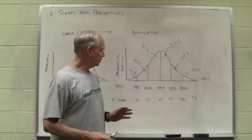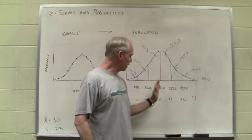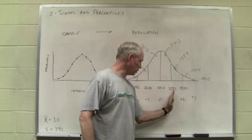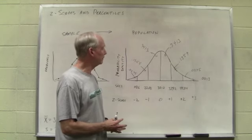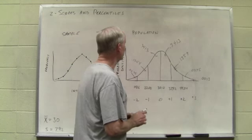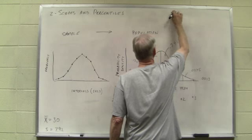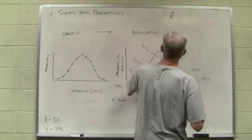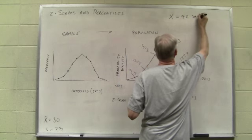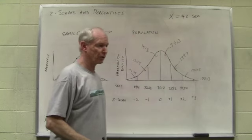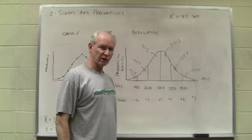Basically, the normal distribution table that's in the back of our book will tell us these proportions, even if they are values that aren't these perfect 0, plus 1, plus 2, plus 3, or whatever. For example, let's suppose that we have a raw score of 35 seconds, excuse me, not a mean, but a raw score of 42 seconds for someone in our task. And we want to find out what's that person's percentile.